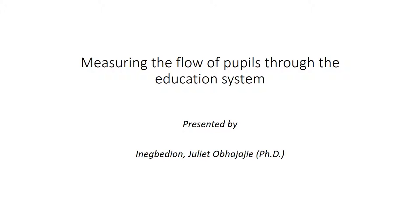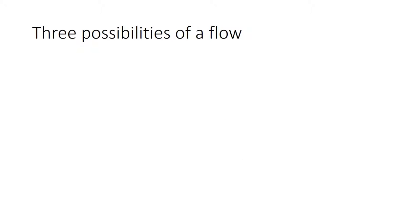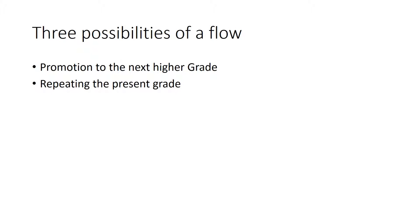Measuring the flow of PPUs through the educational system. There are three possibilities of such measurement: one is through promotion, two is through repeating the present grade, and thirdly, dropout. These are the three possibilities.